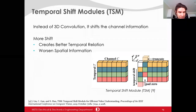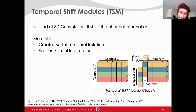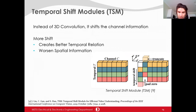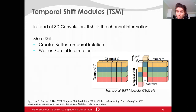Temporal Shift Module (TSM), instead of utilizing 3D convolution, shifts channel information across the temporal dimension in 2D convolution to model spatio-temporal information. However, shift ratio is a hyperparameter and more shifts create better temporal relations but worsen spatial information. The extra computational complexity of TSM is only 2 to 3% compared to 2D CNN architectures.